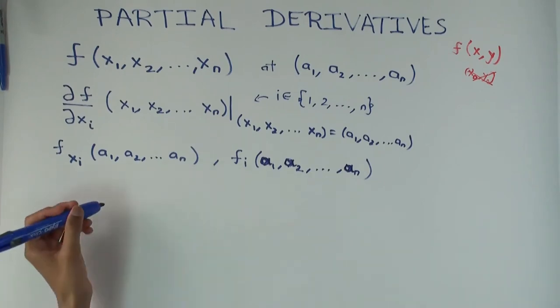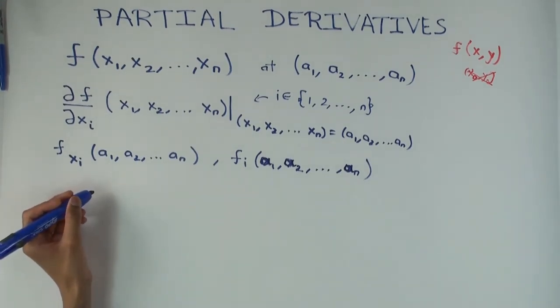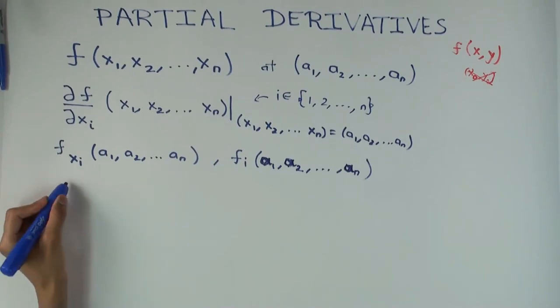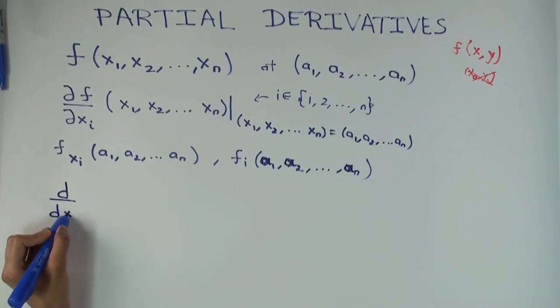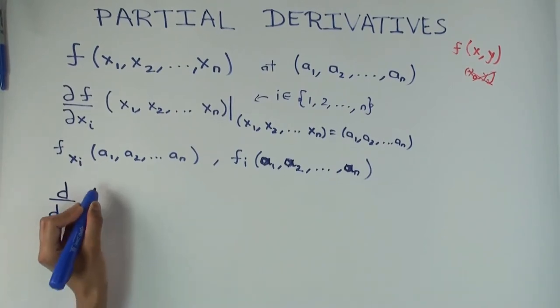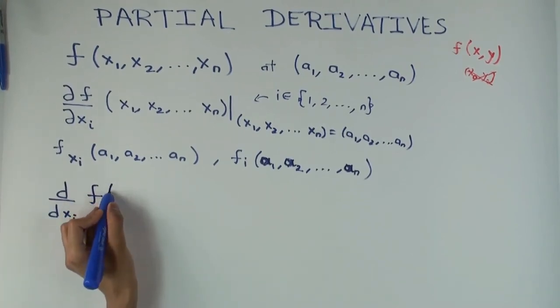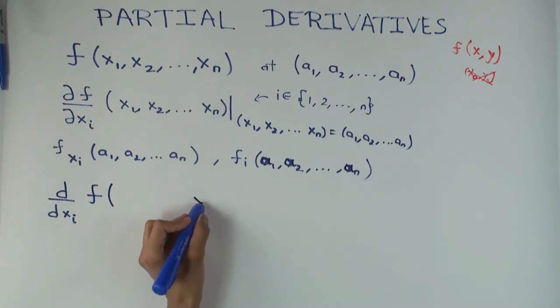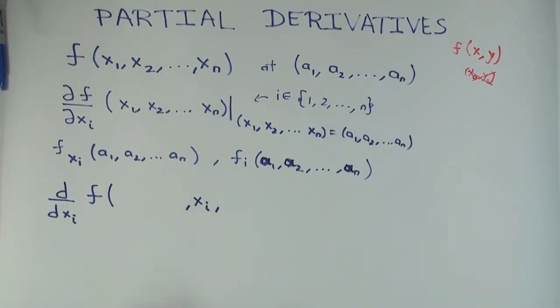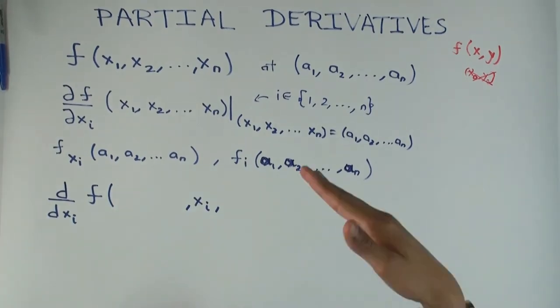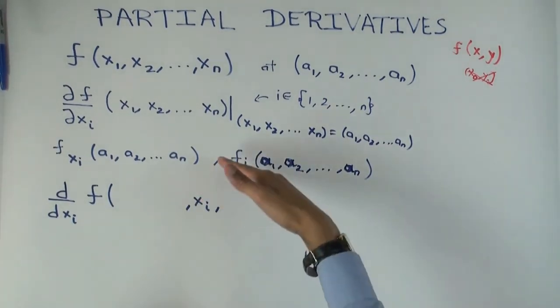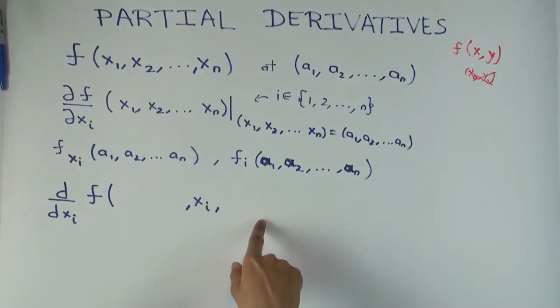Okay. So what I want to do is I want to differentiate with respect to xi. Now this function, the xi coordinate, this will still remain xi. Because this is still a coordinate that I'm trying to vary.